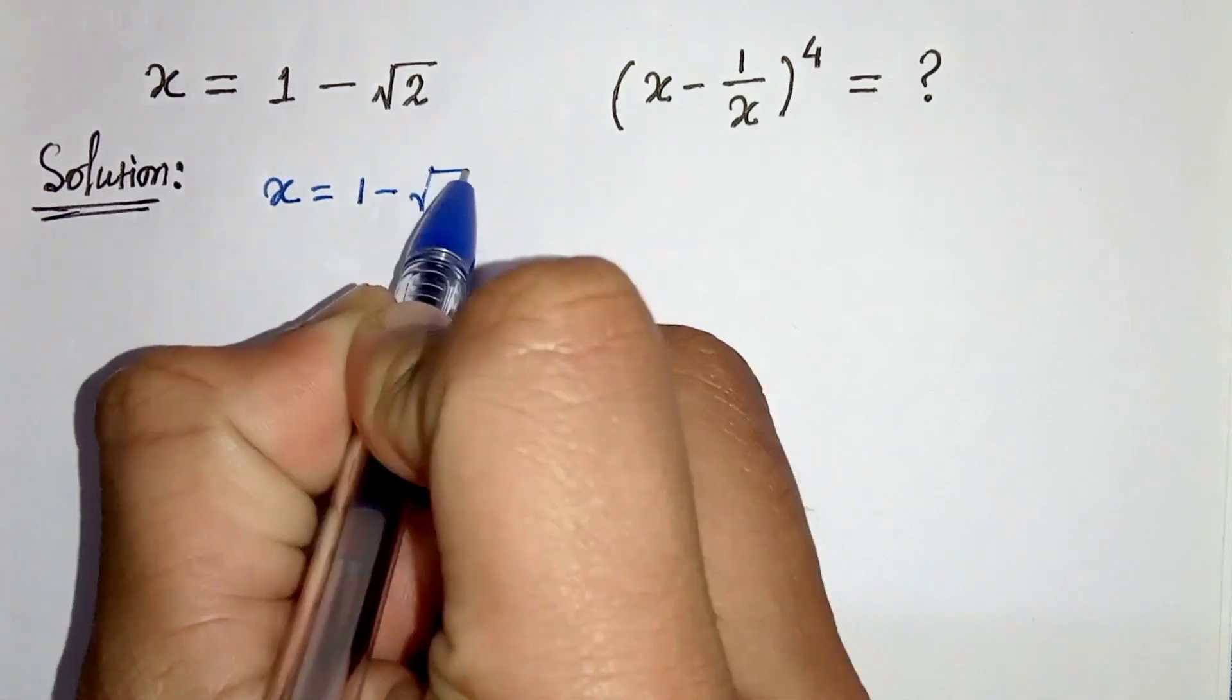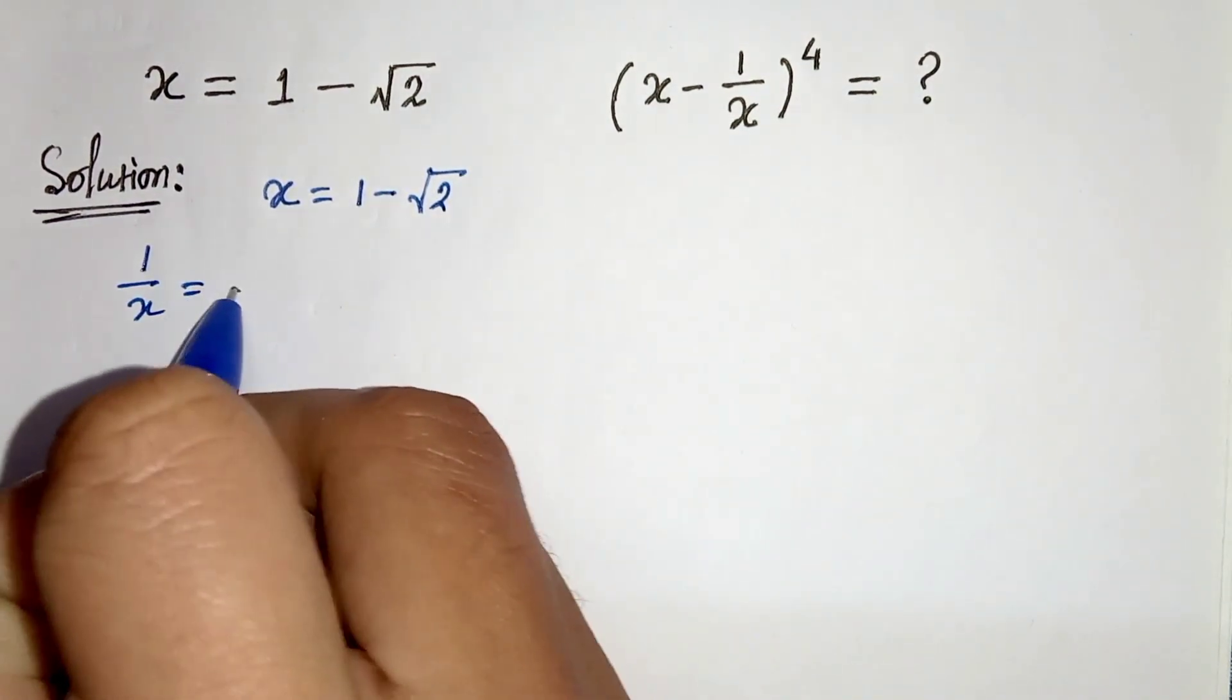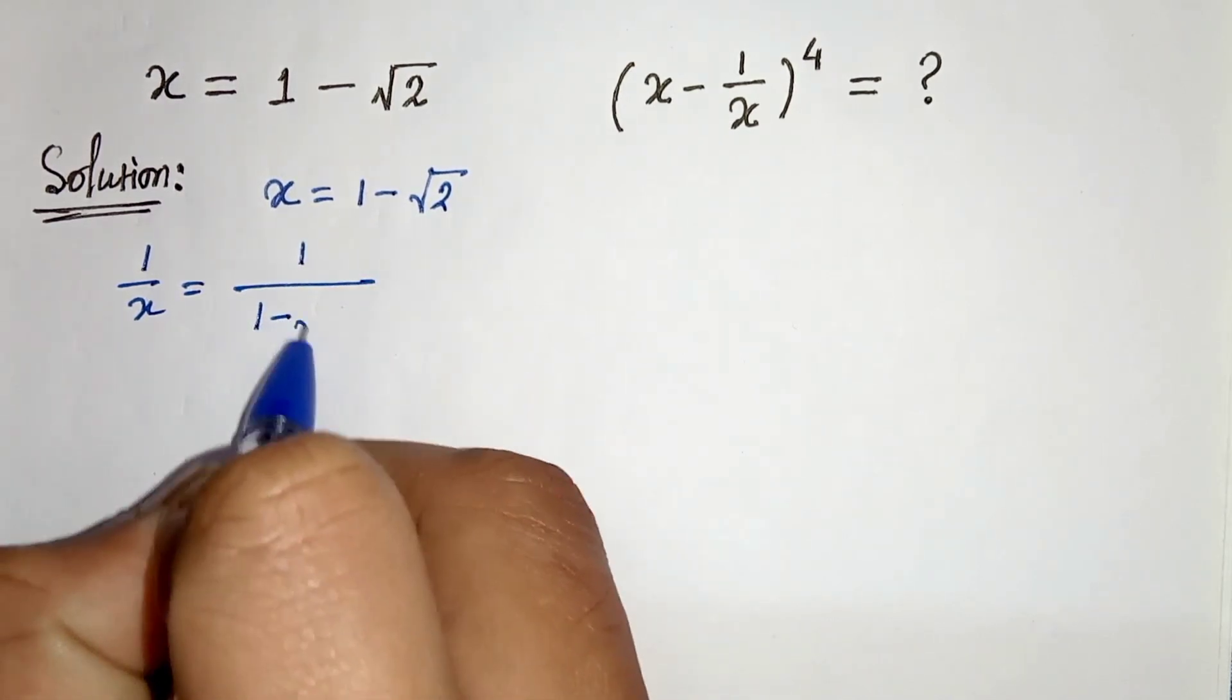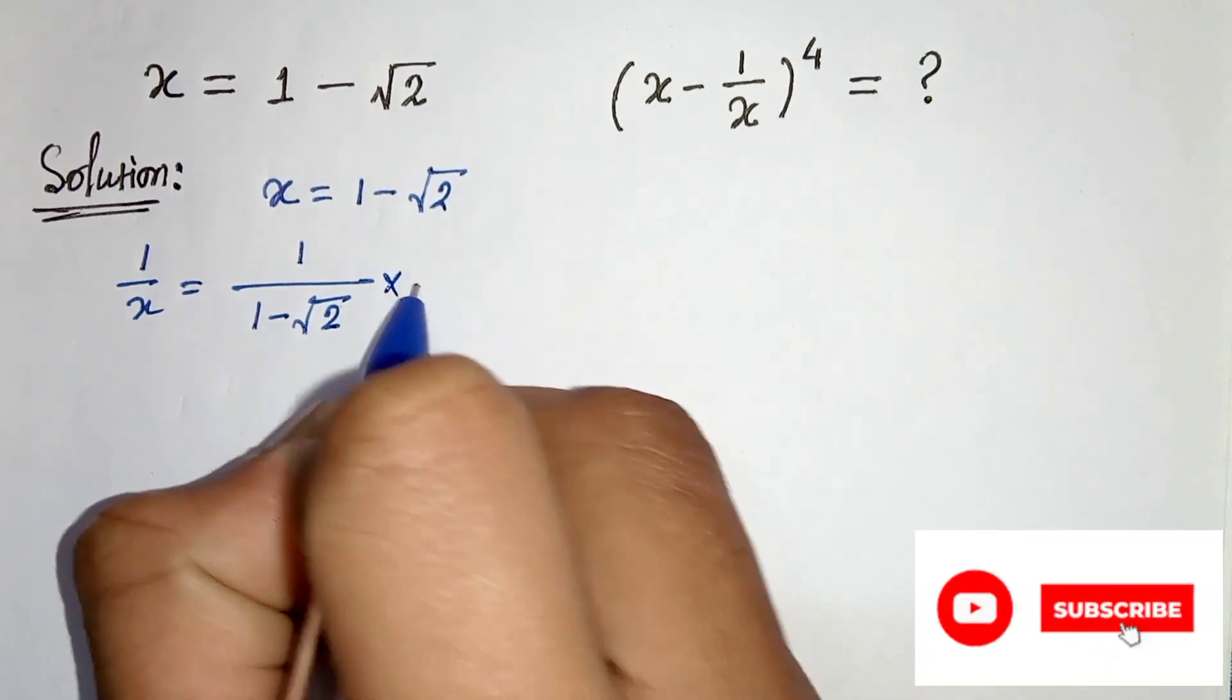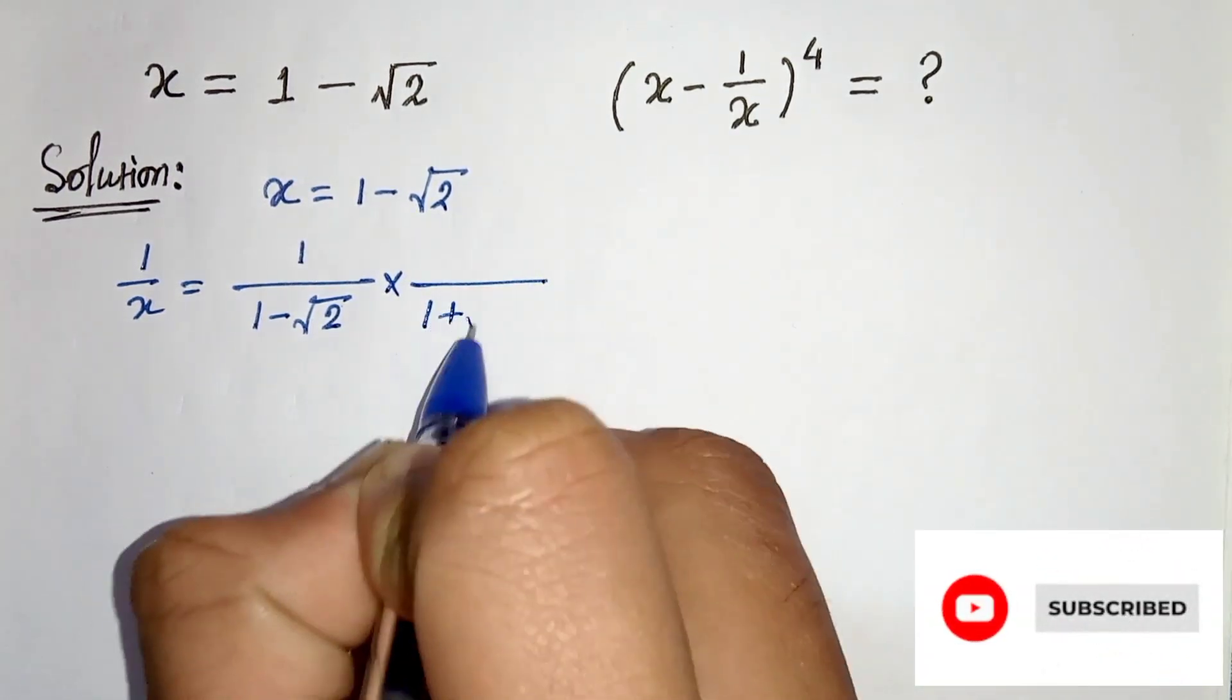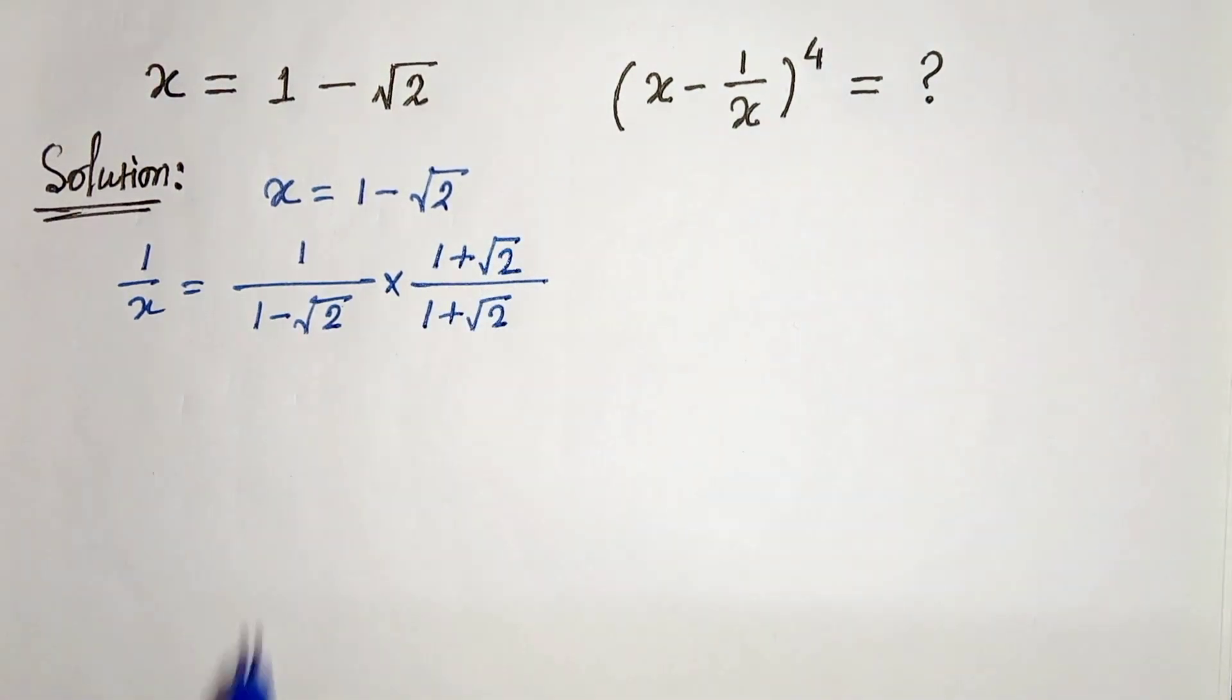Therefore, 1 by x is equals to 1 divided by 1 minus root 2. Now let's rationalize the denominator, so we will multiply with 1 plus root 2 in the denominator and numerator.